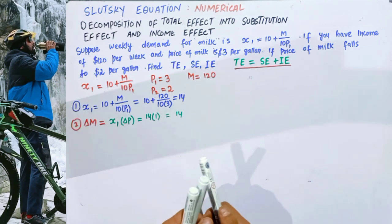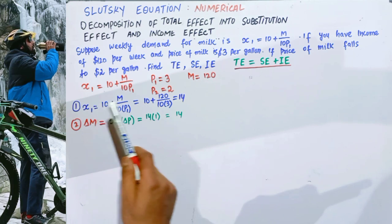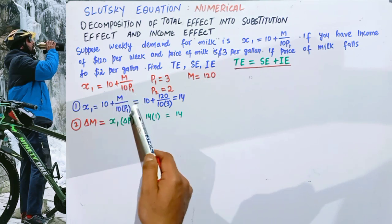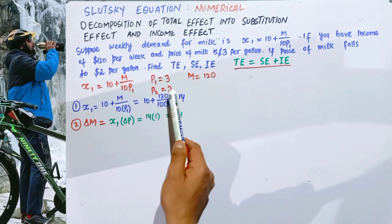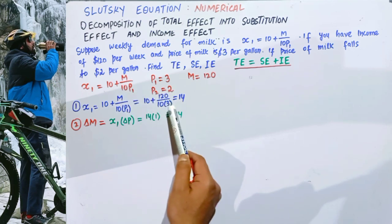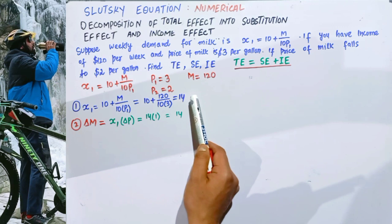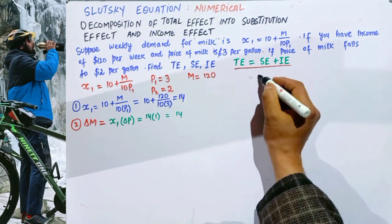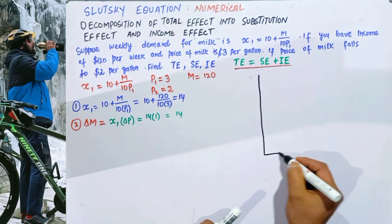The first step is to find the quantity demanded at initial income and initial price. Initial income is $120 and initial price is $3. Solving the demand function gives us an initial quantity demanded of 14 gallons. Let's draw the graph side by side to illustrate what we are doing.